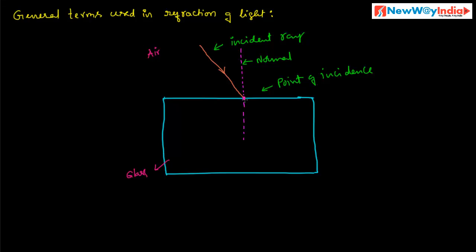A ray that bends in the optically denser medium is called the refracted ray. The refracted ray travels in the second optical medium. It changes its angle of incidence — this is the angle of incidence, and this is the angle of refraction. It bends towards the normal. This is called the refracted ray.